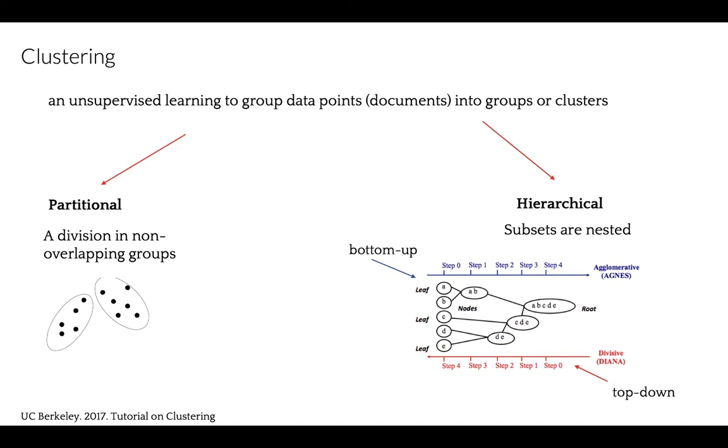This procedure is iterated until all the points are merged, and the result of such a tree can be plotted as a dendrogram. Divisive hierarchical clustering, also known as DIANA, divisive analysis, works in a top-down manner. This is the inverse order of AGNES.